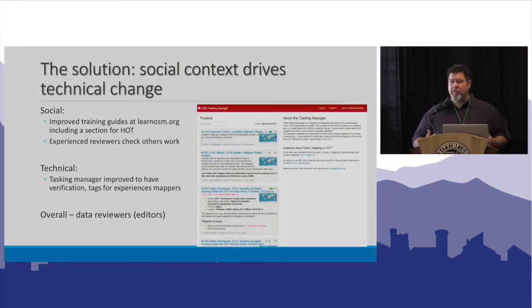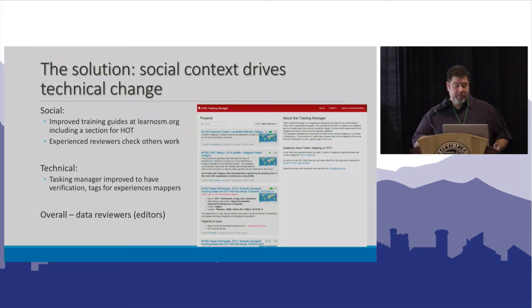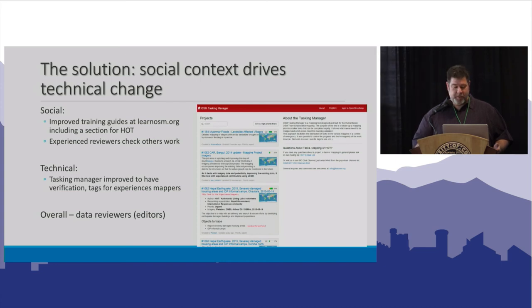The solution from the Humanitarian OpenStreetMap Team was both a social and technological change. Socially, they created new resources like learnOSM.org and had experienced reviewers check work, so now you have the option of requesting work to be checked in the event of a Mapathon. The technical change was implementing the Tasking Manager — now in version 3 — to provide specific instructions and guidance to users. That's been incredibly successful; in the recent hurricanes, the amount of mapping activity has been much, much faster in terms of response.